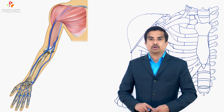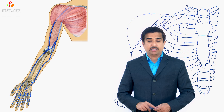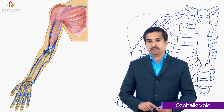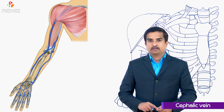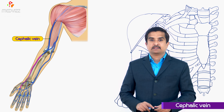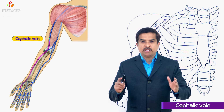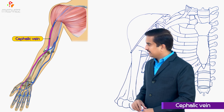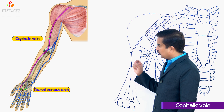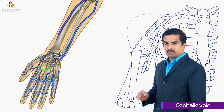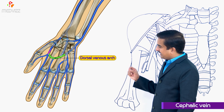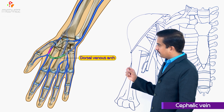The cephalic vein begins as the continuation of the lateral end of the dorsal venous arch. Once the cephalic vein is formed from the lateral end of the dorsal venous arch, it crosses the roof of the anatomical snuffbox.